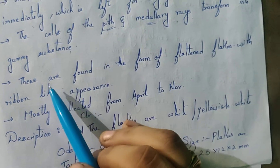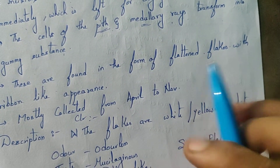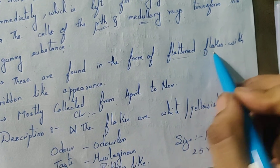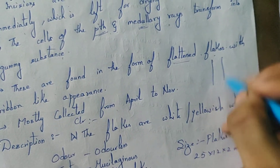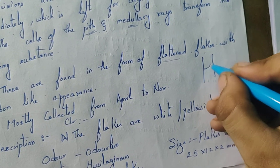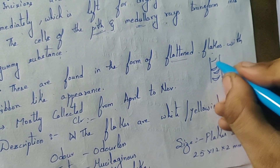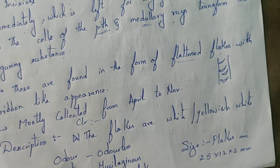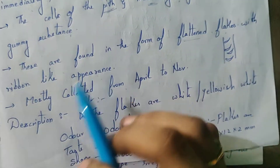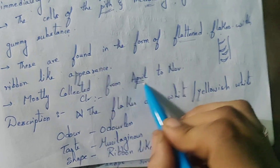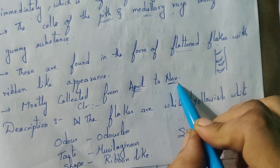These are found in the form of flattened flakes with a ribbon-like appearance. After oozing out of the plant, that is why these are described as flattened, ribbon-like. Mostly collected from April to November.